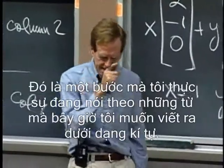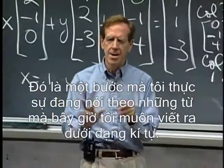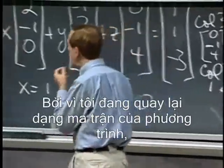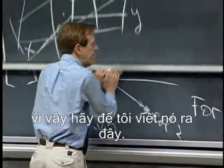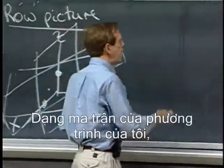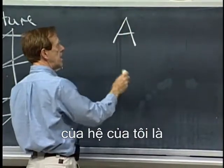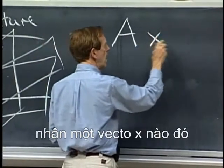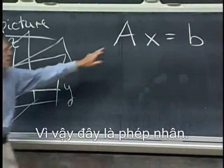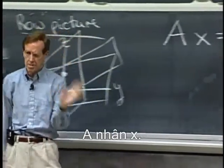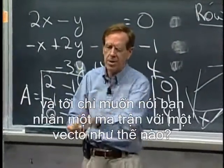There was one step I was saying in words that I now want to write in letters, because I'm coming back to the matrix form of the equation. The matrix form of my system is some matrix A times some vector x equals some right-hand side B. So this is a multiplication — A times x, matrix times vector — and I just want to show how you multiply a matrix by a vector.